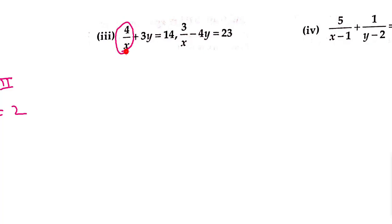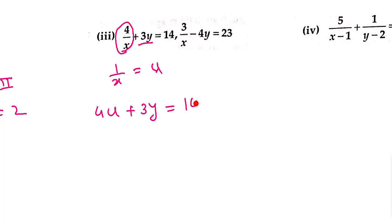Now the third example: here we have 1/x in the denominator, but y is in the numerator — not 1/y. So there's no need to substitute for y; only substitute u = 1/x. The equations become: 4u + 3y = 14 and 3u - 4y = 23.